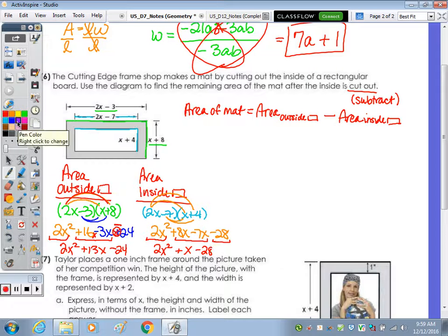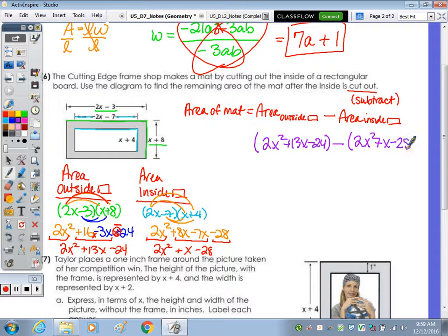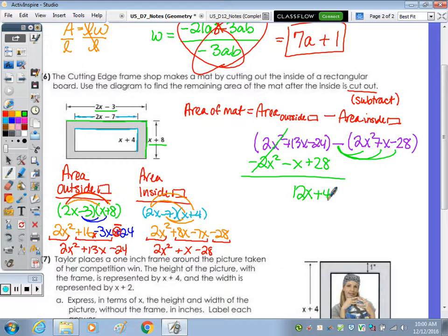Now I'm going to substitute those trinomials. The outside rectangle is 2x squared plus 13x minus 24, and we're going to subtract the area of the inside which is 2x squared plus x minus 28. As I distribute, I'm going to stack. This becomes negative 2x squared, line it up with this x squared, minus x, and negative times negative becomes positive. Adding straight down, those are going to cancel out. 13x minus x is 12x, and negative 24 plus 28 is positive 4. So the area of the mat is 12x plus 4.